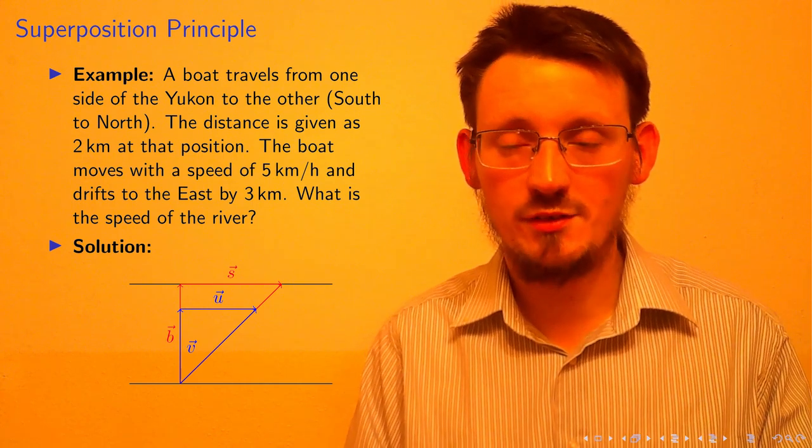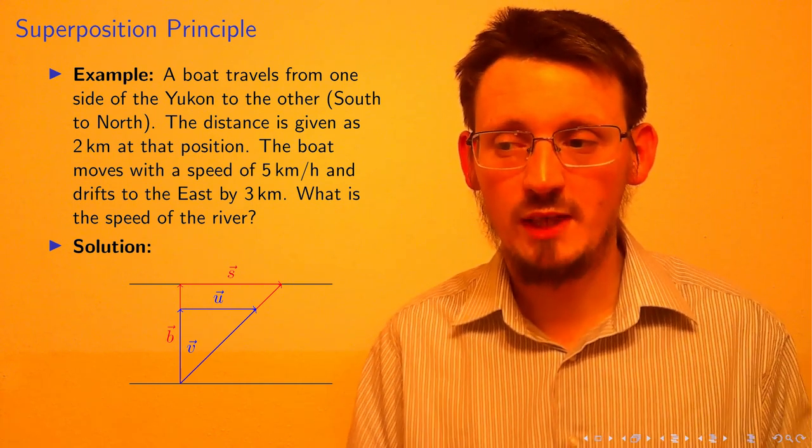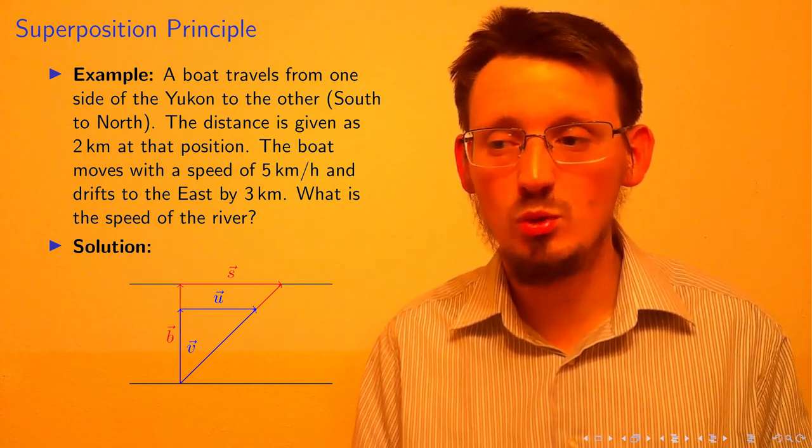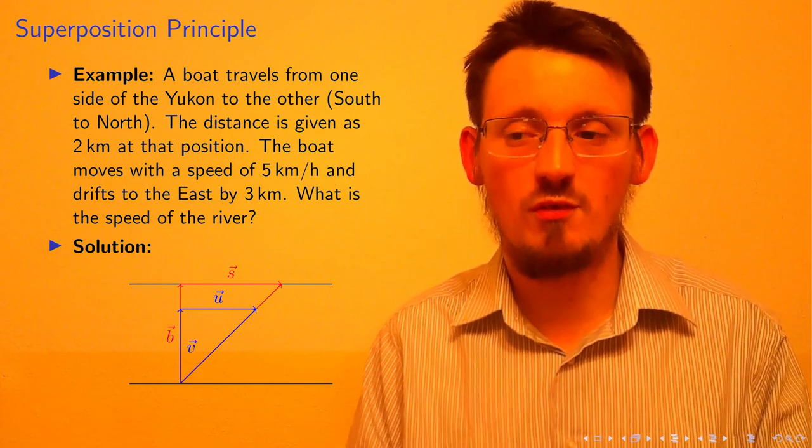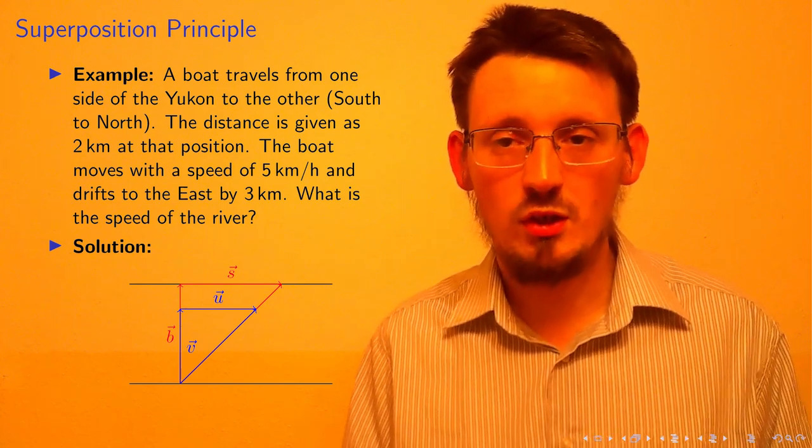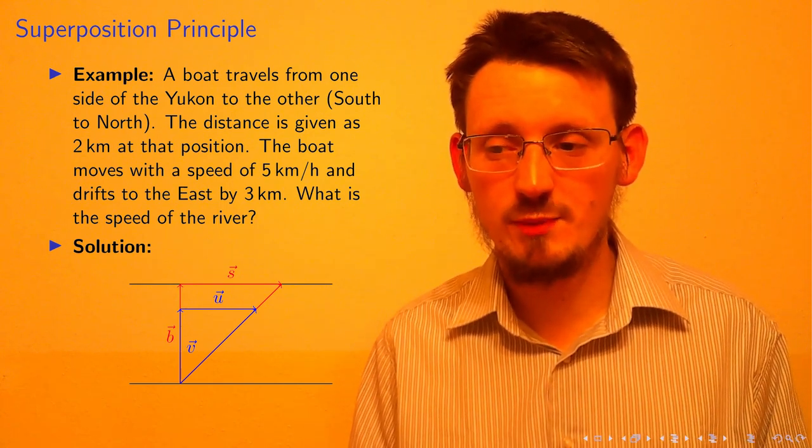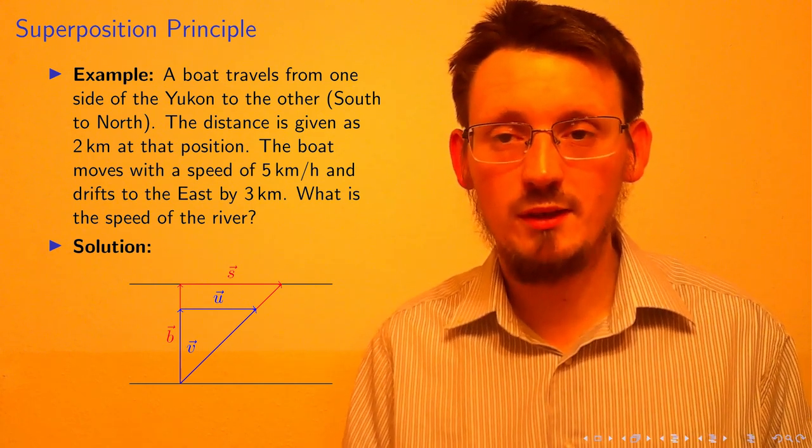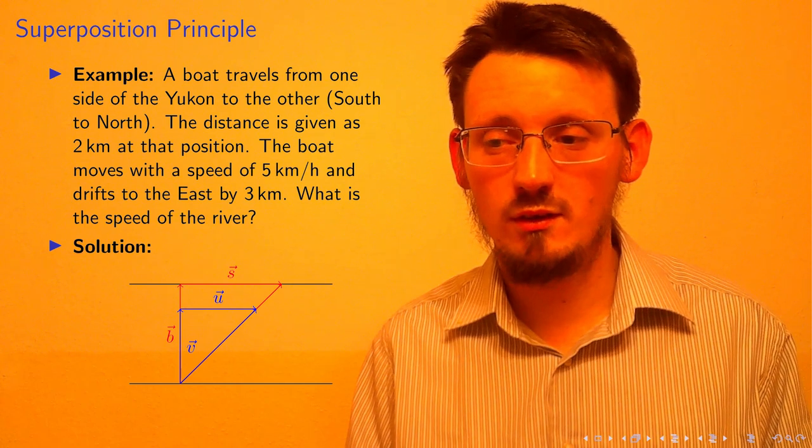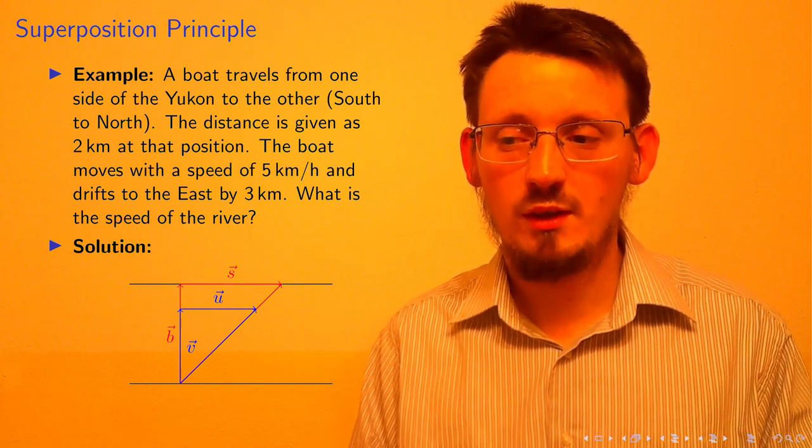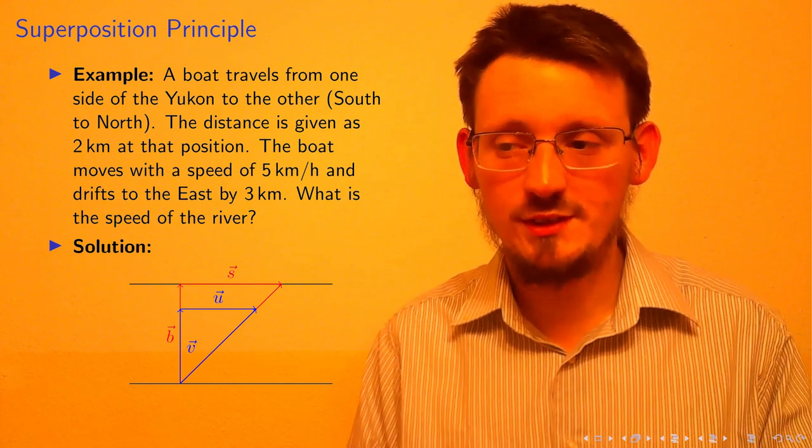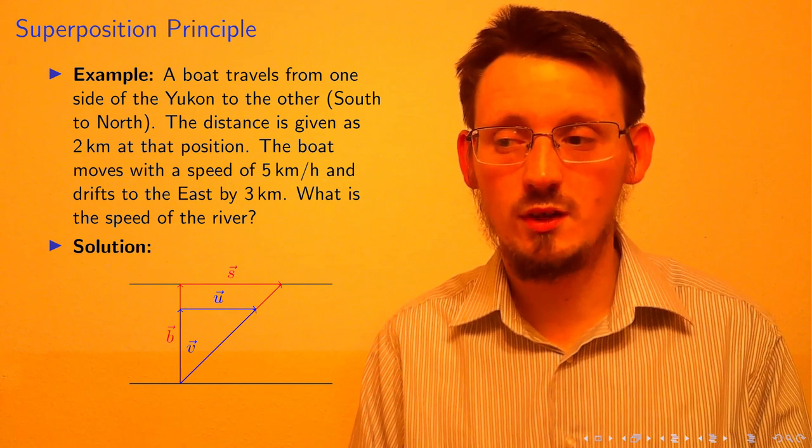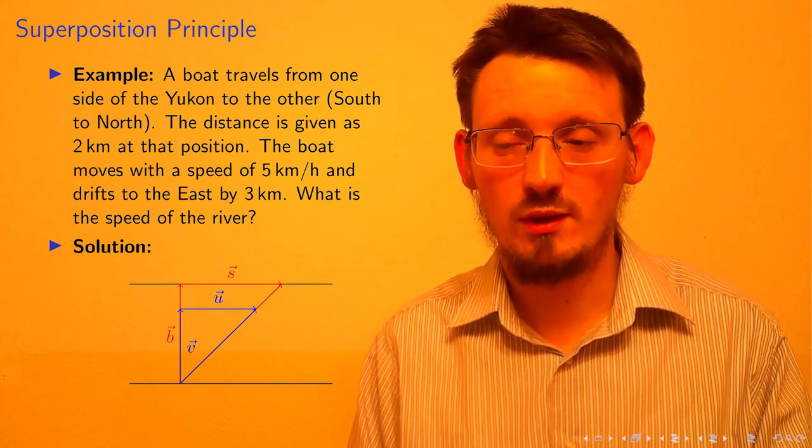I introduced here the letters B for the width of the river, S for the drift of the boat, V stands for the velocity of the boat and U stands for the velocity of the river. Because both velocities and distance vectors are completely perpendicular to each other, they can be treated independently from each other, which means that basically for us it is completely sufficient to take only the absolute values of these quantities into account.